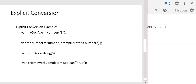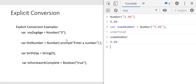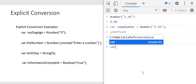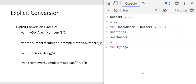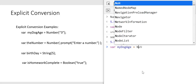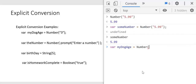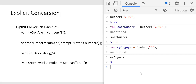Let's look at some explicit conversion examples. Let's say we want to create a variable called my_dog_age and assign that to the Number function converting the string with the character three in it. JavaScript knows that three is a digit, so it can convert that to a number, and now my_dog_age has the value 3 in it.